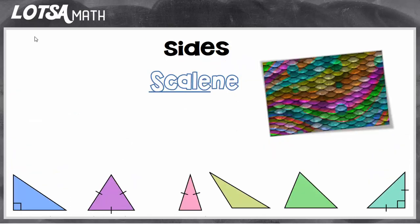First we'll do sides. If a triangle has no sides that are the same length, it's called a scalene triangle. I can remember that name when I think about the scales on a fish — no two scales are the same. So a scalene triangle has no two sides that are the same.